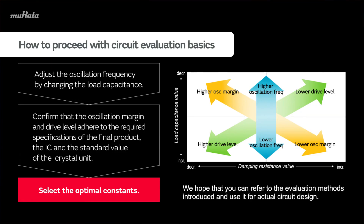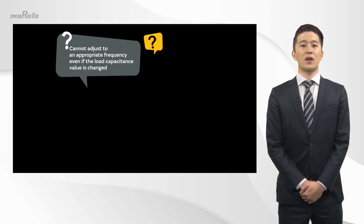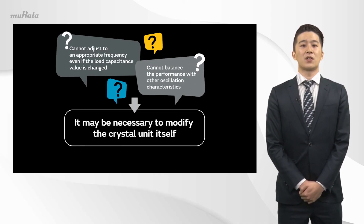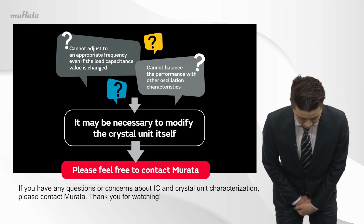We hope that you can refer to the evaluation methods introduced and use them for actual circuit design. If you run into a problem such as not being able to adjust an appropriate frequency even if the load capacitance value is changed, or not being able to balance the performance with other oscillation characteristics, it may be necessary to modify the product itself. If you have any questions or concerns about IC and crystal unit characterization, please contact Murata. Thank you for watching.